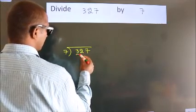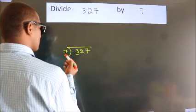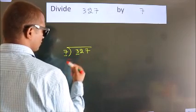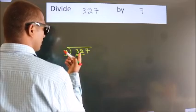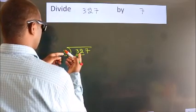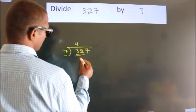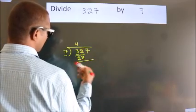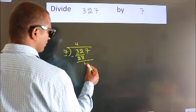Here we have 3, here 7. 3 is smaller than 7, so we should take 2 numbers: 32. A number close to 32 in the 7 times table is 7 fours, 28. Now we should subtract. We get 4.